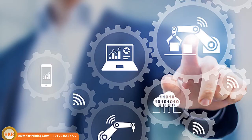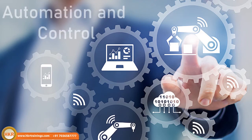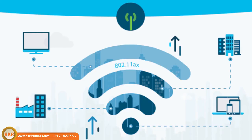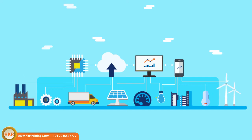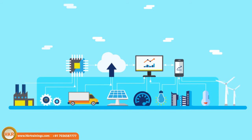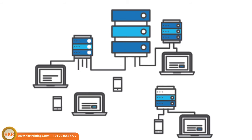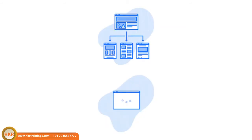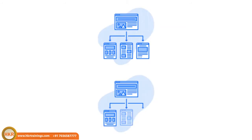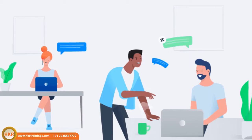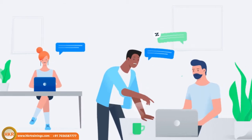The second one is automation and control. There are two physical devices. The digital and wireless infrastructure can be used to connect with a large amount of automation and control. Without human interaction, we can communicate between two devices. We can increase our workflow and optimize the output time.